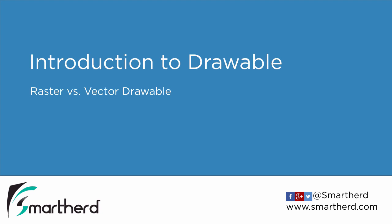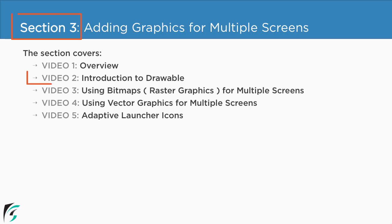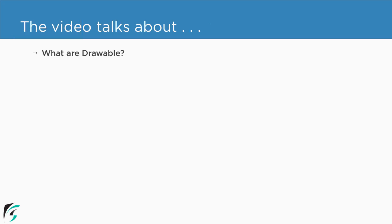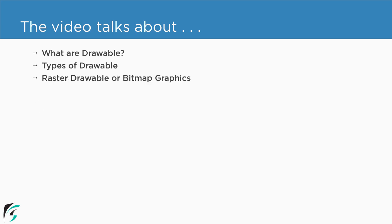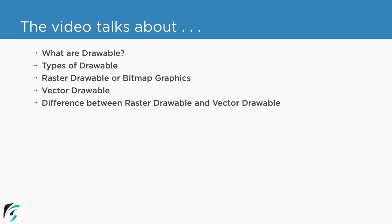Introduction to Drawables. We are in section 3 and we are about to check out the second video of this section. In this video, we will see what are drawables, types of drawables, what are raster drawables, what are vector drawables, and what are the differences between these two.